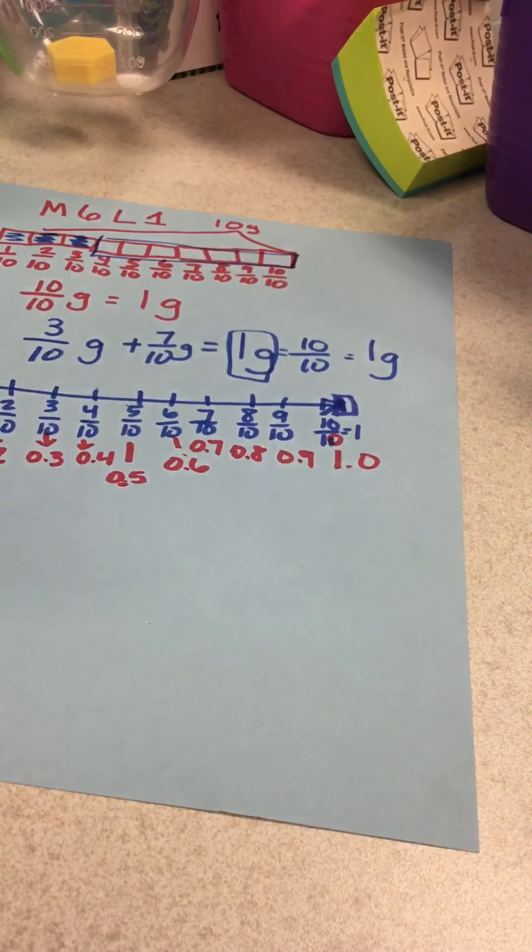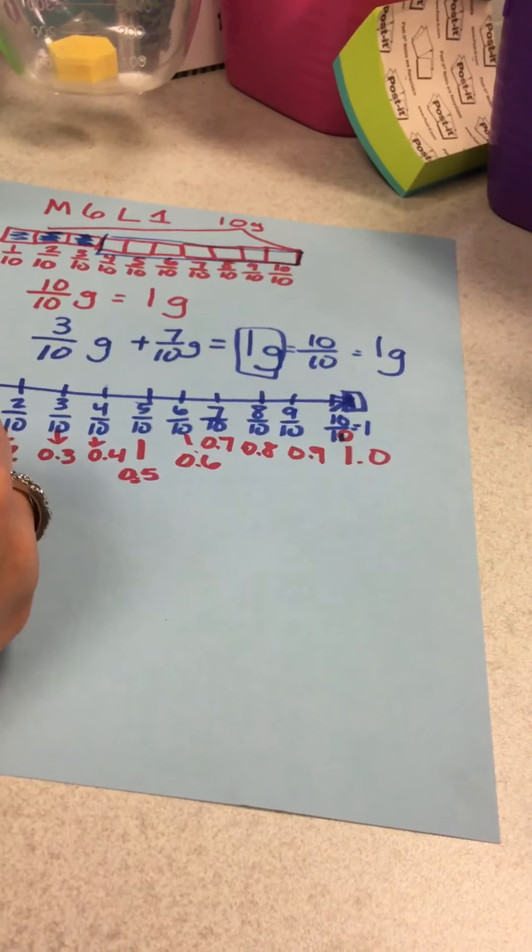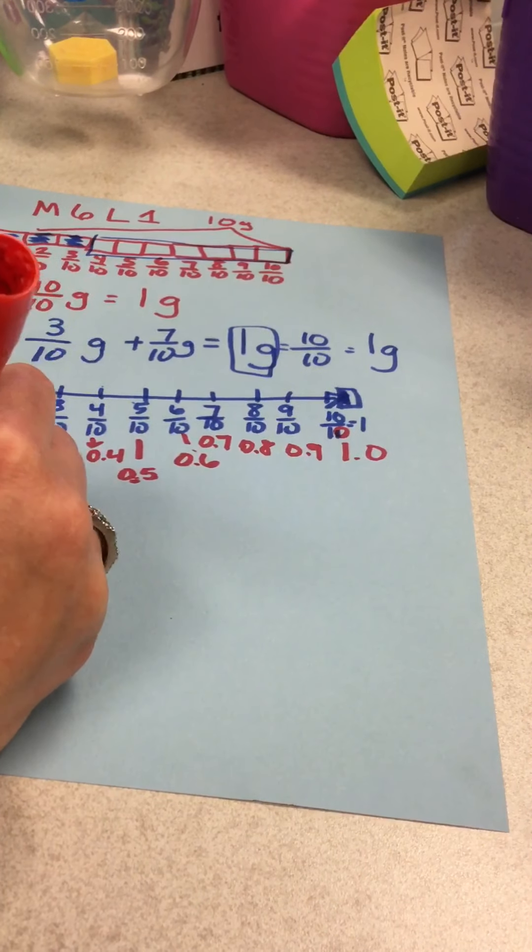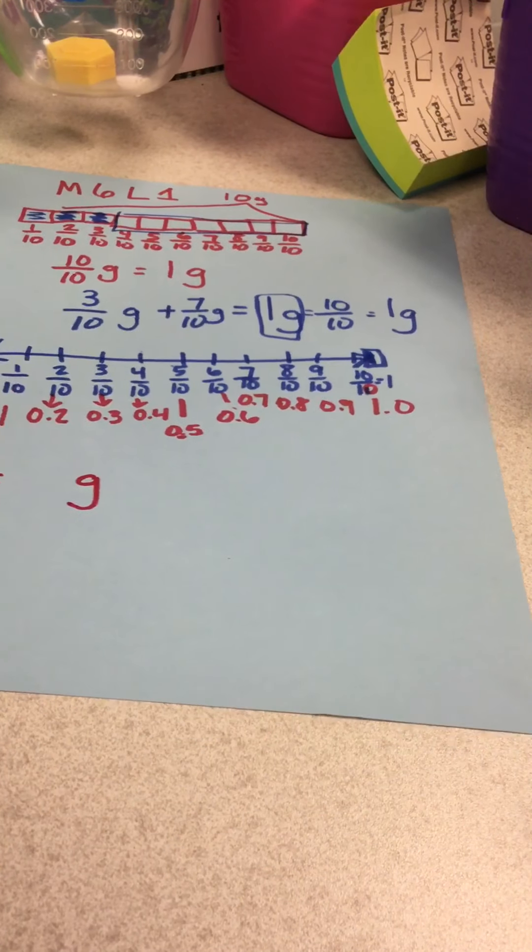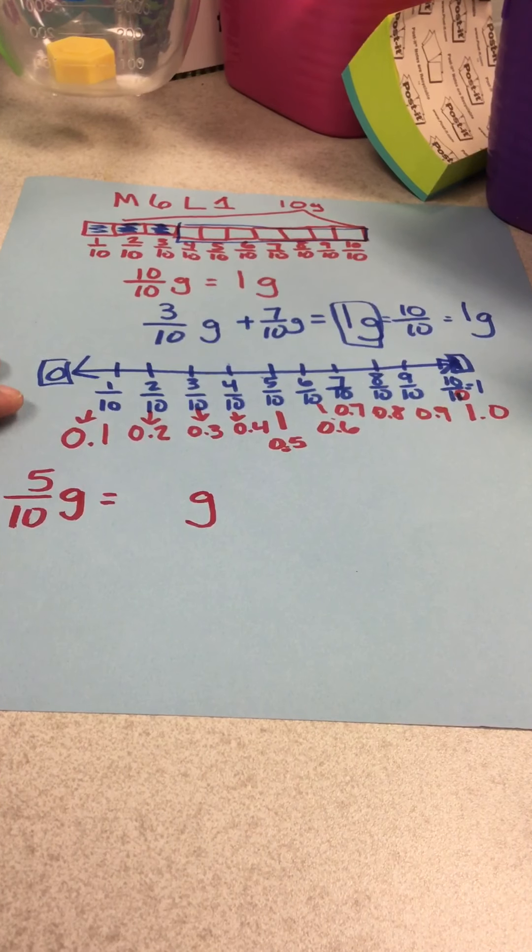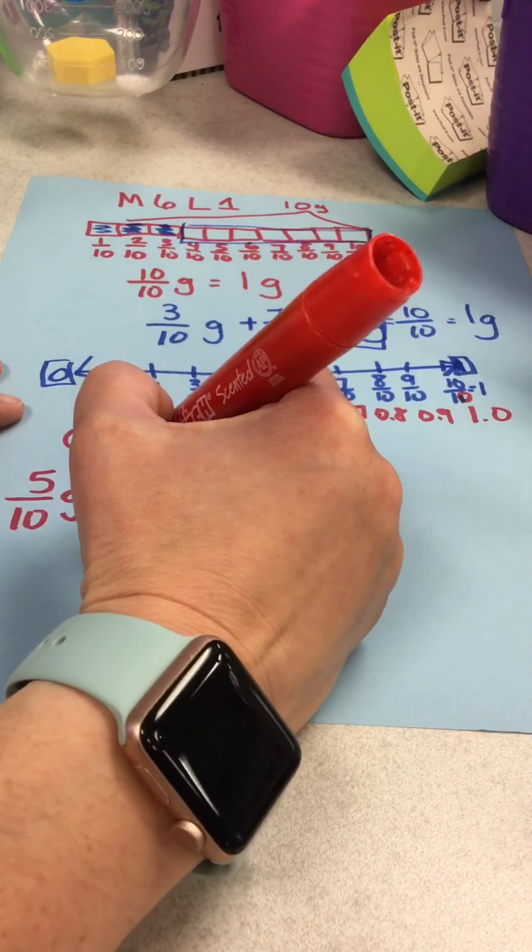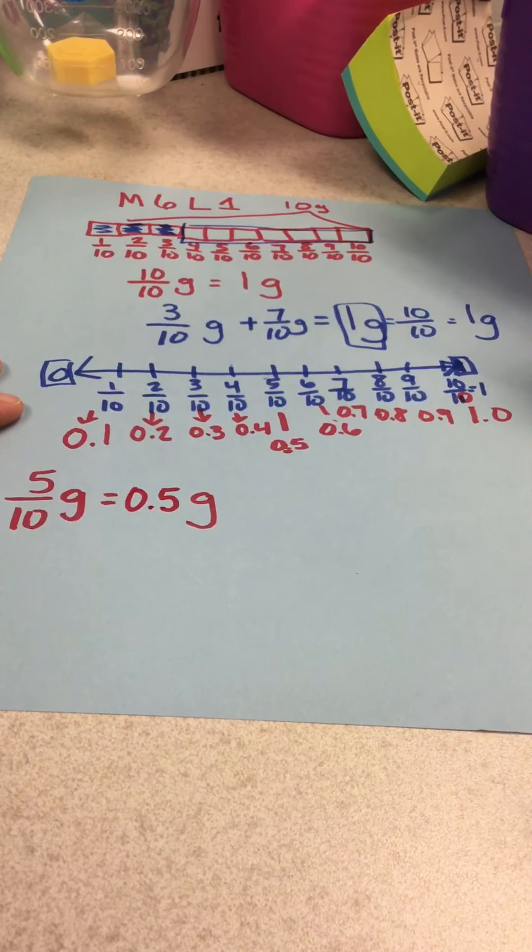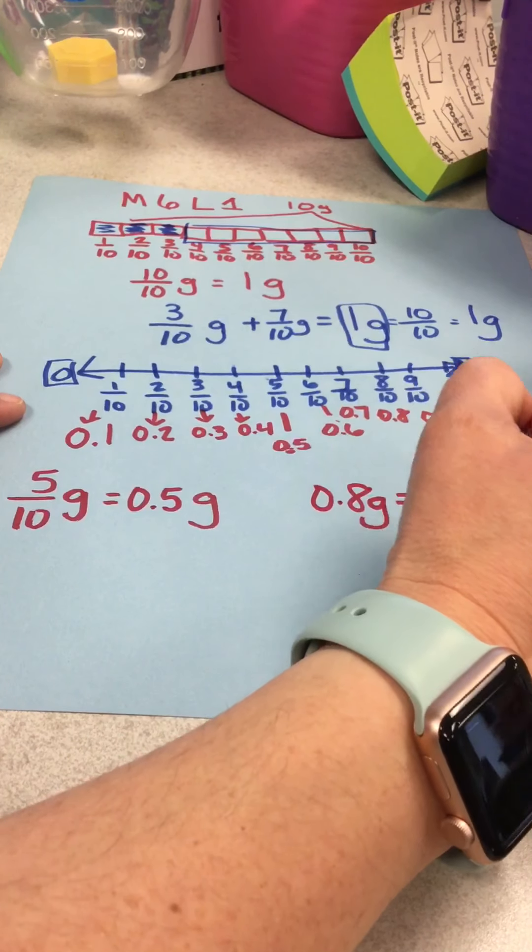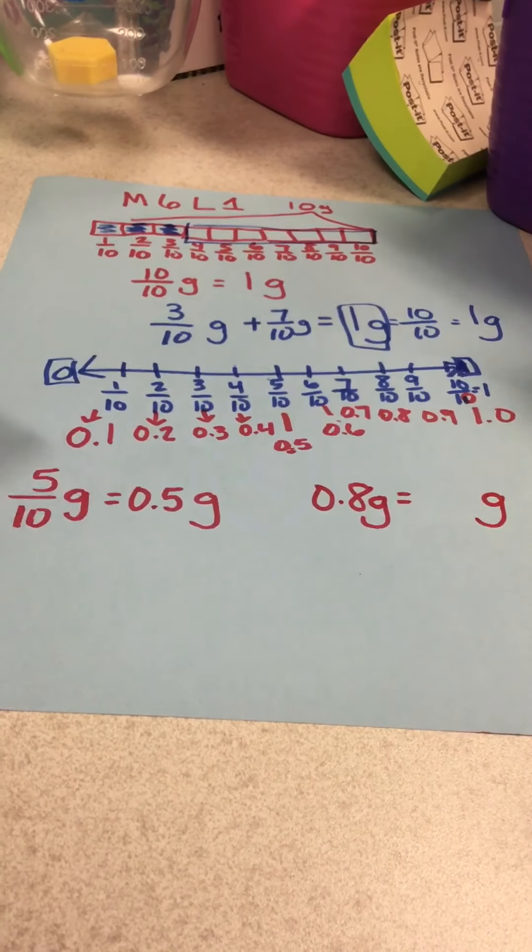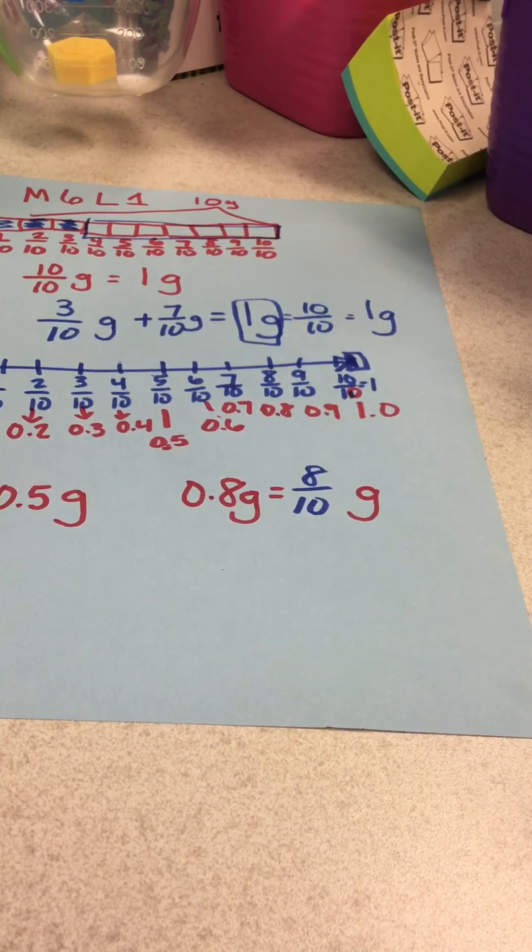Let's do a few examples. If I have five tenths grams, what would that equal in decimals? If you said zero point five, you're correct. What if I had zero point eight grams, equals what in fractions? What would you write? You would write eight tenths.